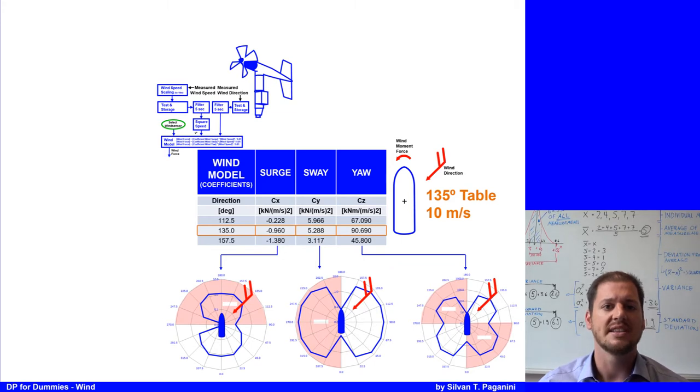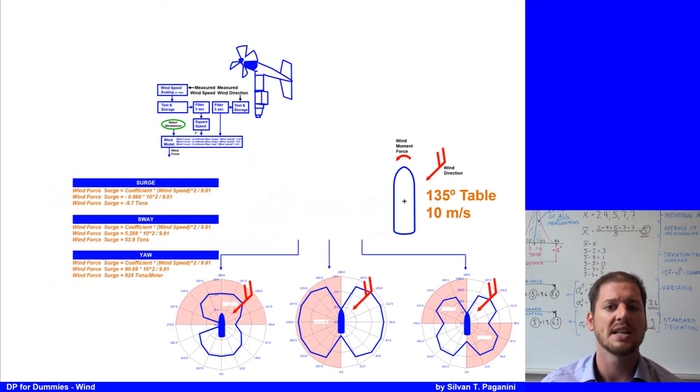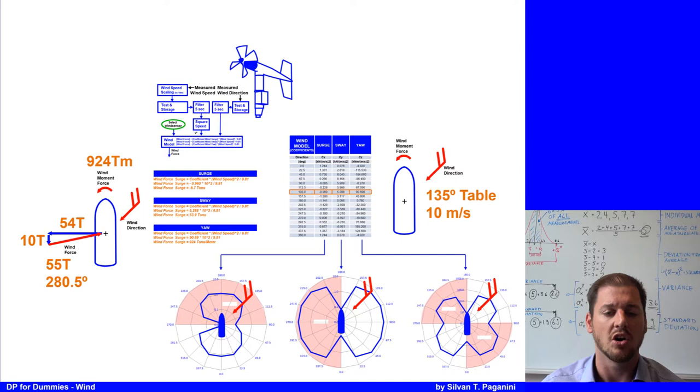Now we take the coefficient from the table and calculate the wind force: the coefficient multiplied by the square of the wind speed divided by 9.81. As a result, we have to compensate 54 tons in sway, 10 tons in surge, and a momentum of 924 tons per meter for yaw.